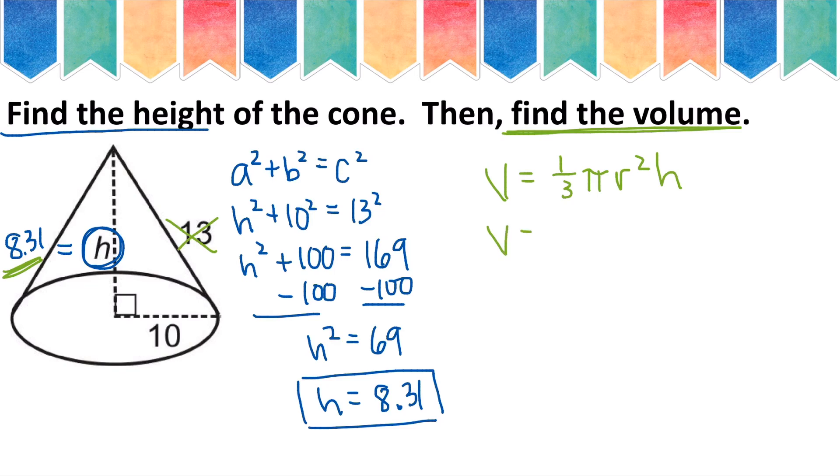So my volume will be 1 third pi, my radius is 10, multiplied by 8.31. Carefully type this into your calculator. And you get the approximate answer of 870.22. And we always label volume as units cubed.